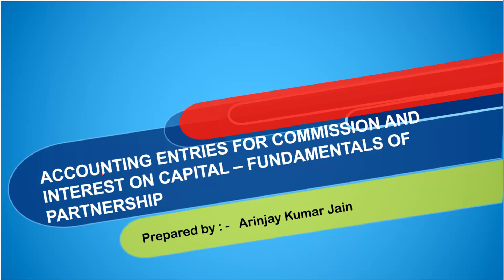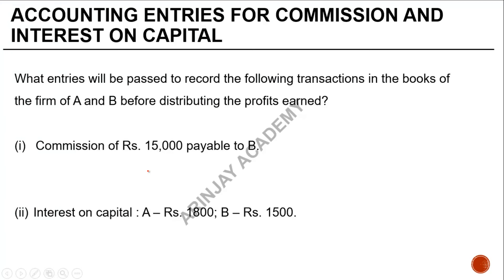Let us understand what are the accounting entries which are passed for commission to partners as well as interest on capital to the partners. What entries will be passed to record the following transactions in the books of the firm of A and B before distributing the profits earned?